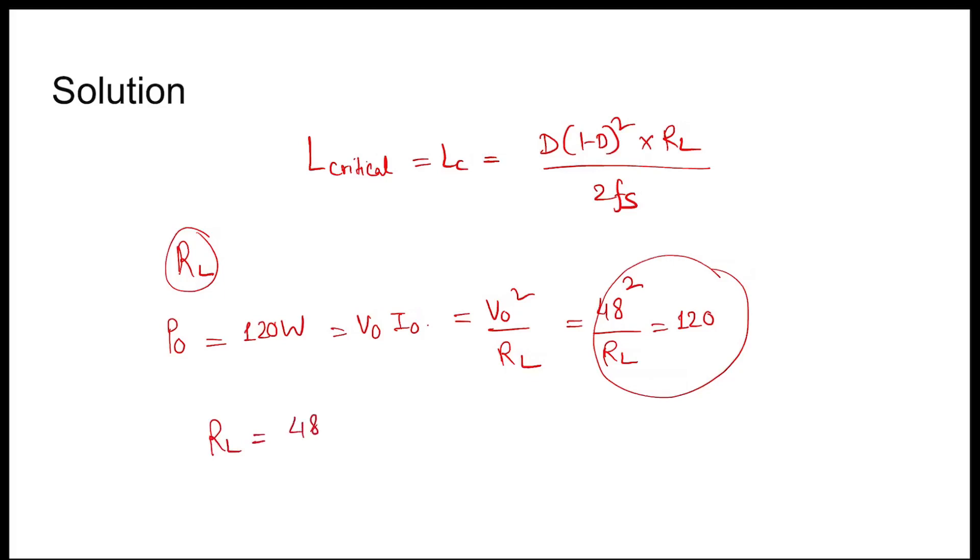RL equals 48 squared divided by 120. So after solving we get the value of RL to be 19.2 ohms.